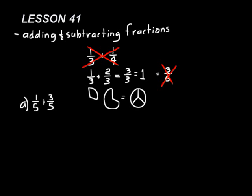In practice problem A, we have a five for both denominators, so we just add the numerators. One plus three is four over five — four-fifths. If we wanted to, we could make a picture to help us. Let's make some rectangles — five rectangles. One-fifth is one of those five, so we shade that in. Then we add three more of the five: one, two, three. Now four of the five are shaded, so our answer is four-fifths.